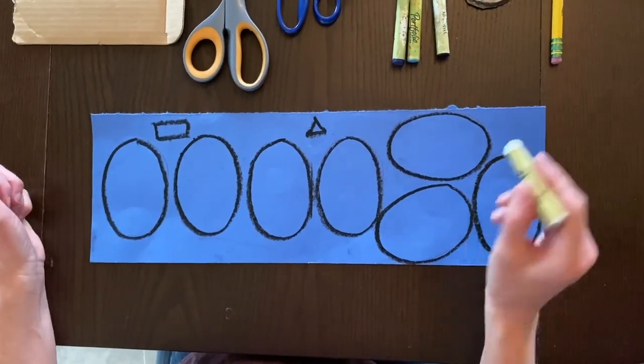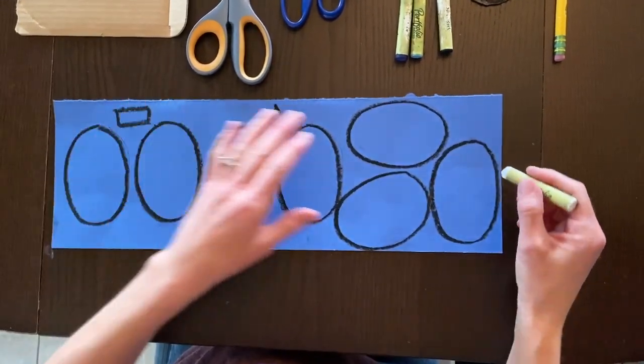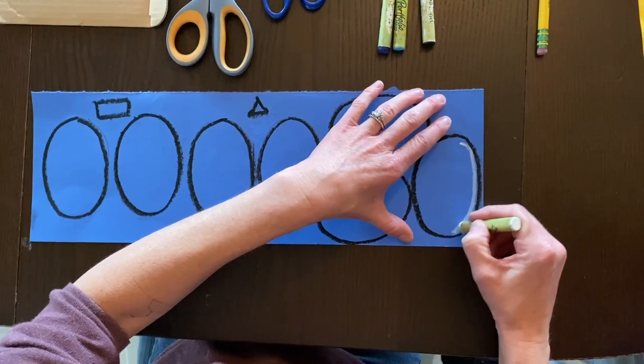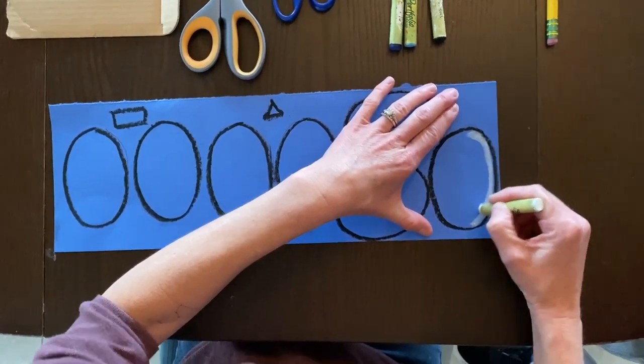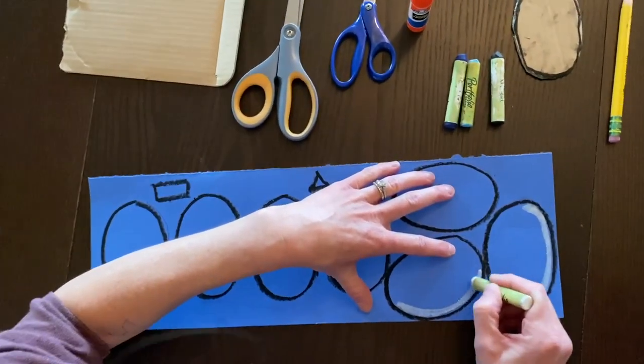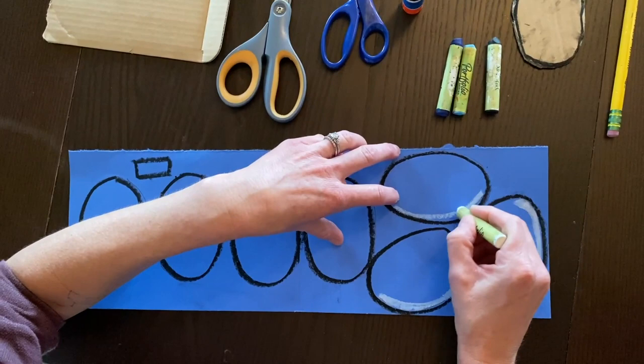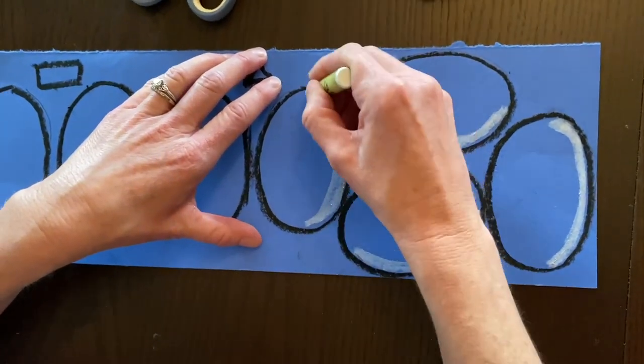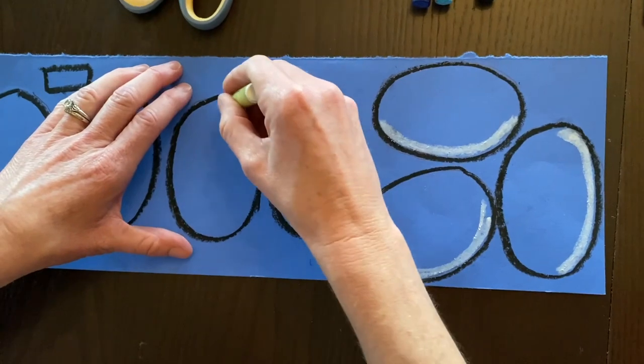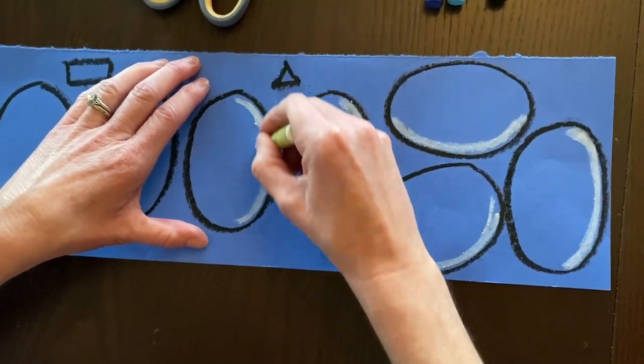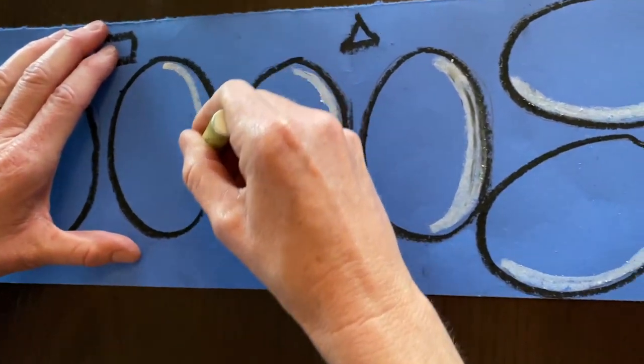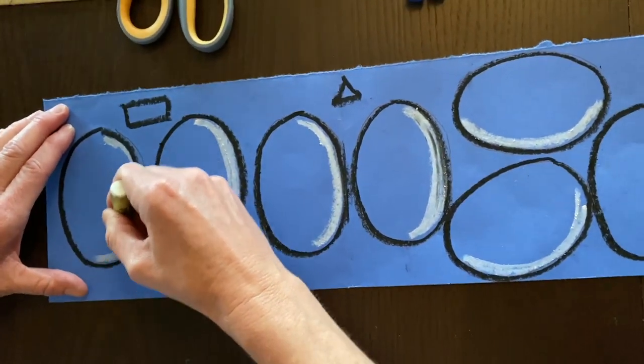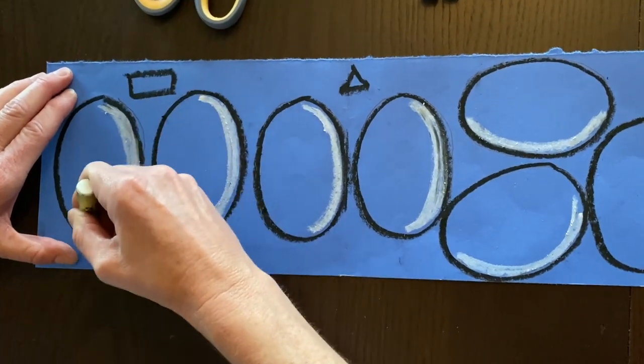Now, you're going to take your white, whether it be a crayon, whether it be paint, or whether it be an oil pastel. And on one side, we're going to do a white highlight. White highlight and try not to mix that in with the black. So you want the white highlight to be on the same side. Now, because these are going in the opposite direction, some of them are laying on their side and some of them are upright, but you want to pick a side and have it be on that same side. If it mixes in a little bit with the black, that's fine.